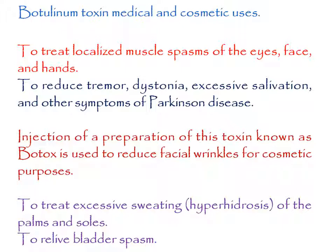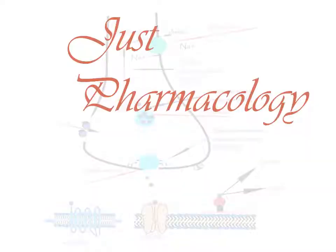Botulinum toxin has also been used to treat excessive sweating (hyperhidrosis) of the palms and soles, and irrigation of the urinary bladder with botulinum toxin may provide long-lasting relief of bladder spasm.